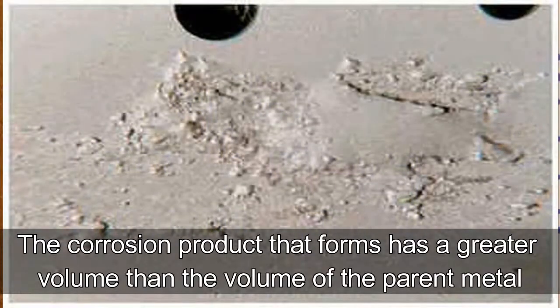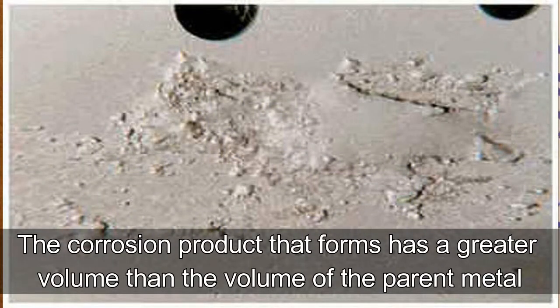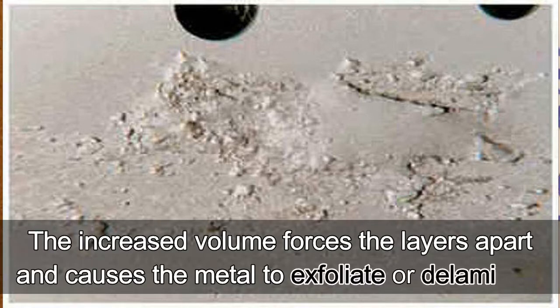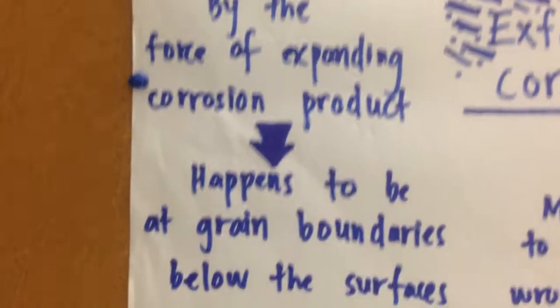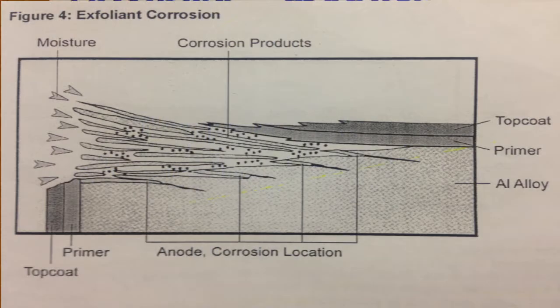The corrosion product that forms has a greater volume than the volume of parent metal. The increased volume forces the layers apart and causes the metal to exfoliate or delaminate. This seems to happen at grain boundaries just below the surfaces.